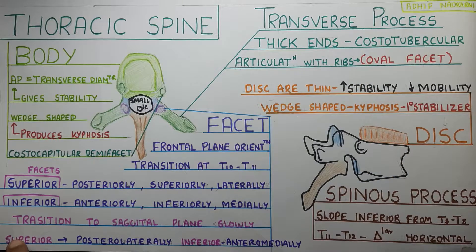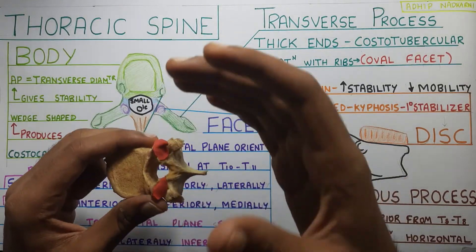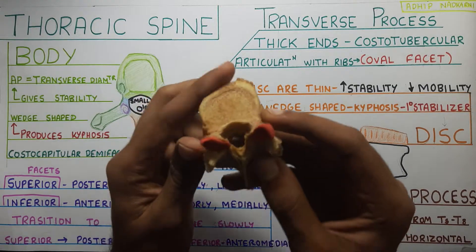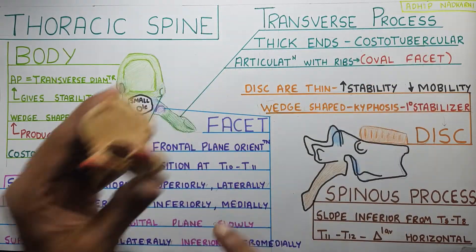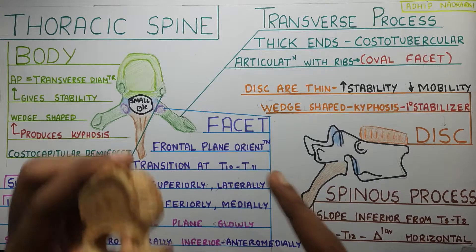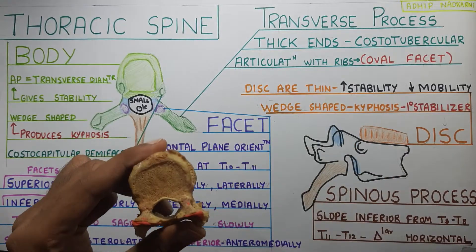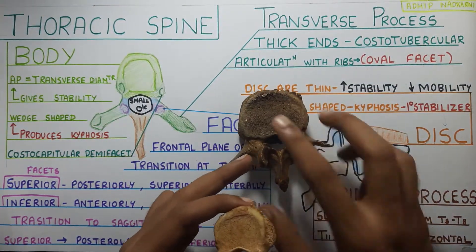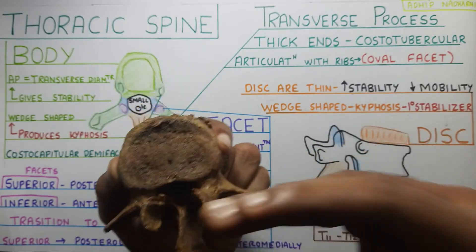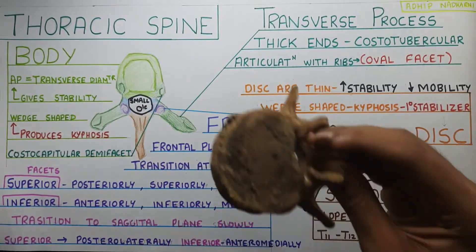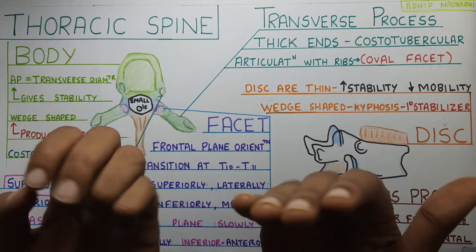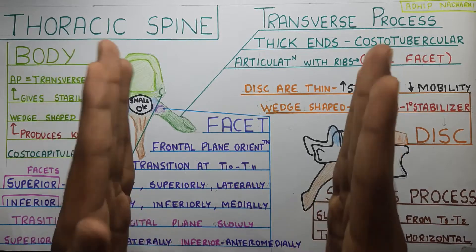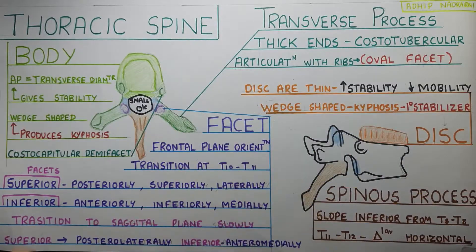As you go down into the lower thoracic regions, the superior facet starts facing more posteriorly and laterally, while the inferior facet starts facing more anteriorly and medially. This is the transition toward the lumbar vertebra orientation. In the lumbar vertebra, the facets are oriented medially and laterally in the sagittal plane. So in the thoracic region, the facets start with frontal plane orientation and then shift to sagittal plane orientation, which increases flexion-extension movement in the lumbar region.